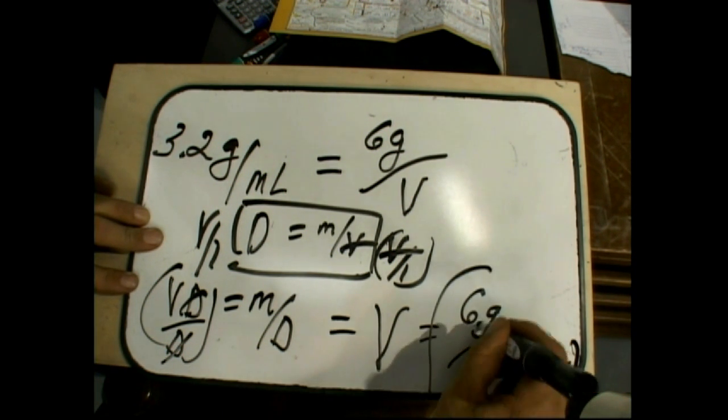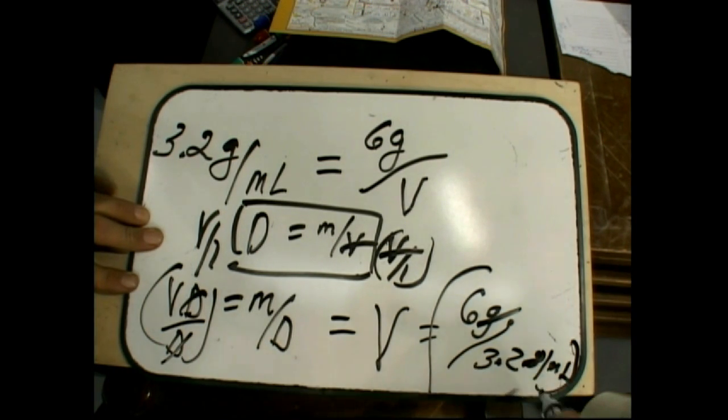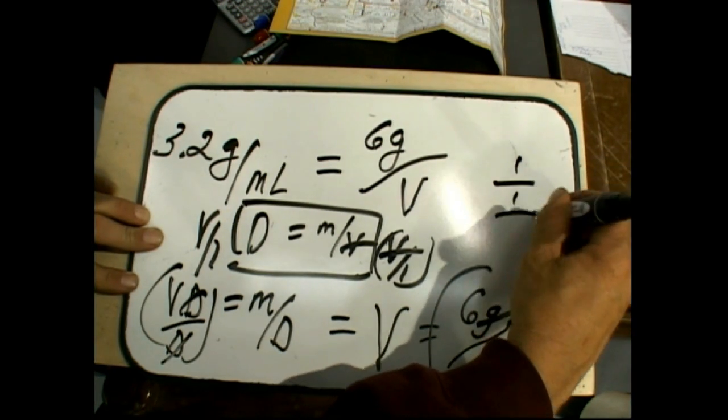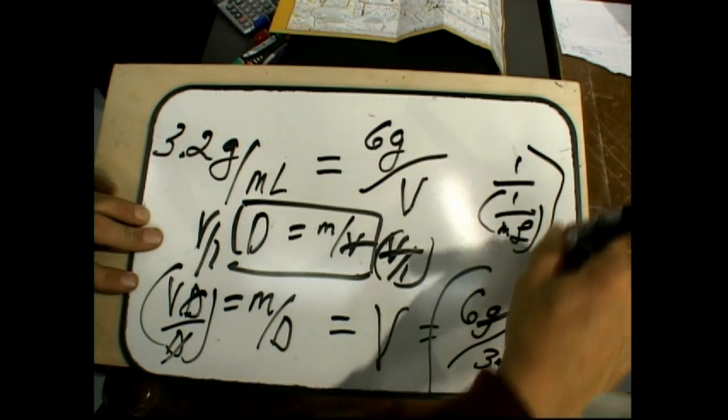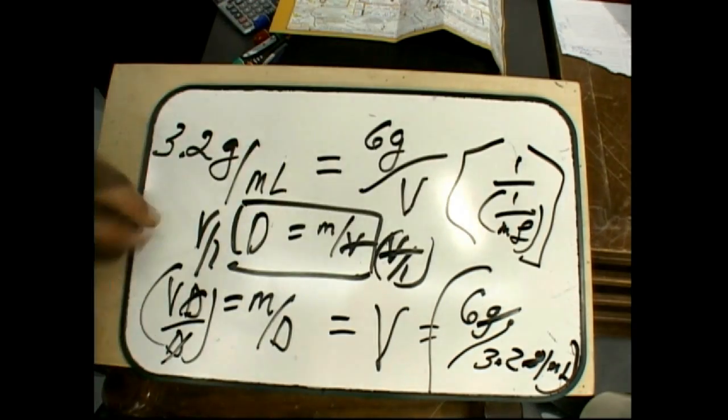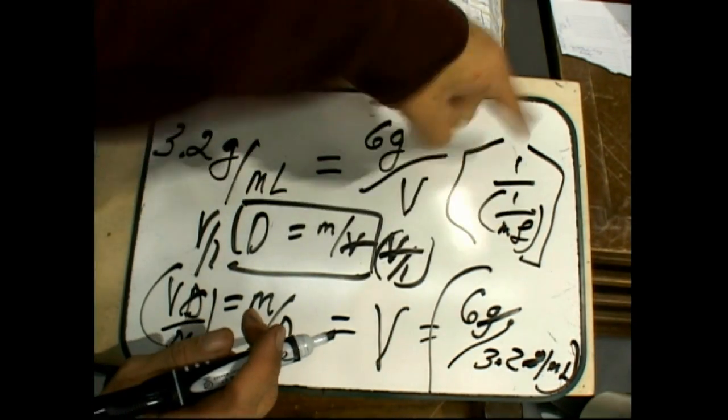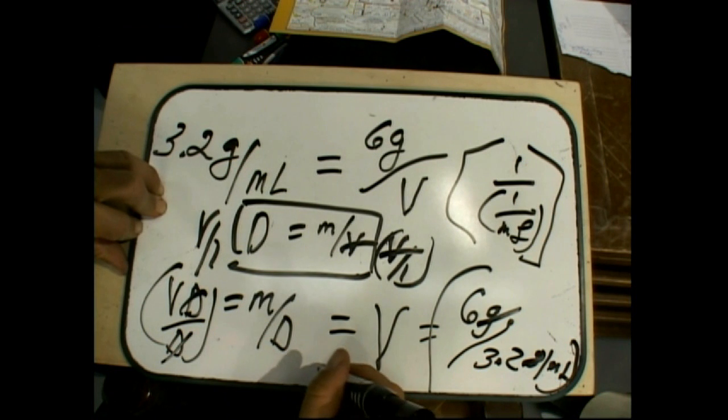So what happens is grams cancel. You got one over one over something. This is where your brackets come in really handy. So that actually becomes inverted to be milliliters. And that's what volume is, is milliliters.